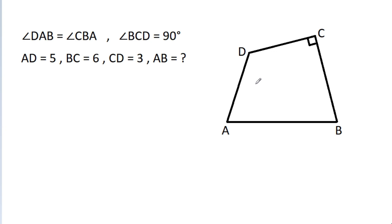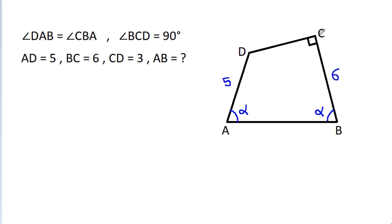In this video, we have been given that angle DAB is equal to angle CBA, and angle BCD is 90 degrees. AD is 5, BC is 6, CD is 3, and we have to find AB.